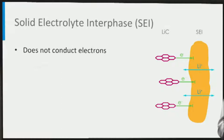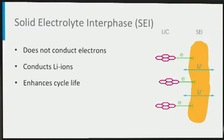The SEI should not conduct electrons, to protect the rest of the electrolyte from the graphite electrode potential. In that case, the electrolyte decomposition is passivated, very similar to a thin aluminum oxide layer that prevents aluminum from oxidizing further when exposed to air. The SEI should conduct ions, allowing the necessary lithium ion transport during battery charge and discharge. Electrolytes are optimized to form a stable, electronically insulating and lithium-ion-conducting SEI, all aiming at a long battery cycle life.